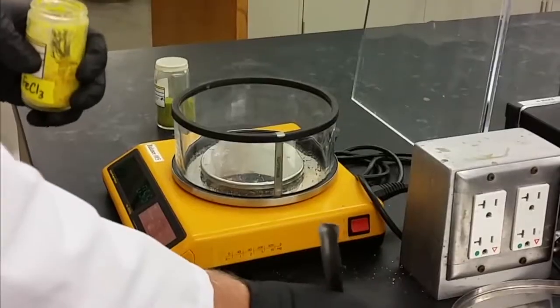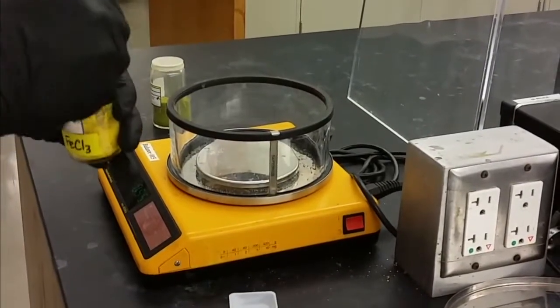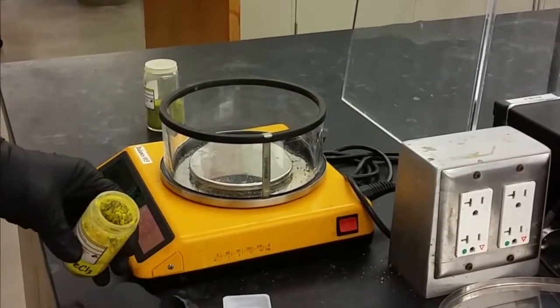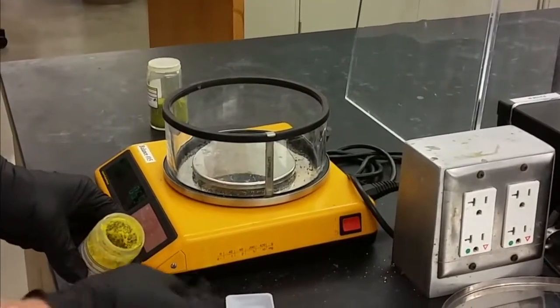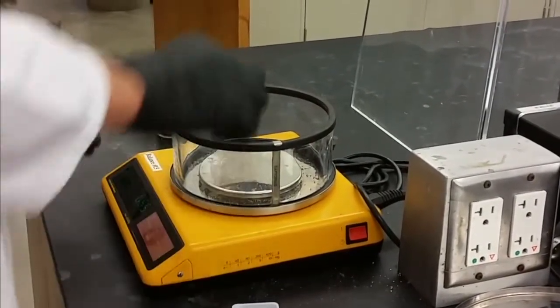In setting up this lab, the first thing you have to do is measure out the proper amounts of iron three chloride hexahydrate and iron two chloride tetrahydrate. This is a chance for you to put into practice what you learned when you passed off this skill.